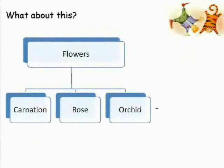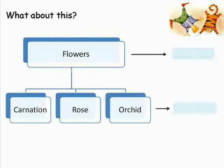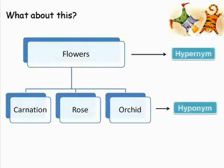Now let's practice. In the following classification table, which is the hypernym and which are the hyponyms? Flowers is the hypernym. Wild, carnation, rose, and orchid are members of the group and they are the hyponyms of flowers.